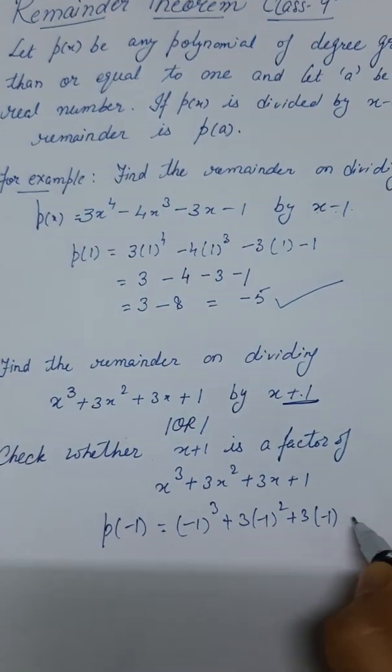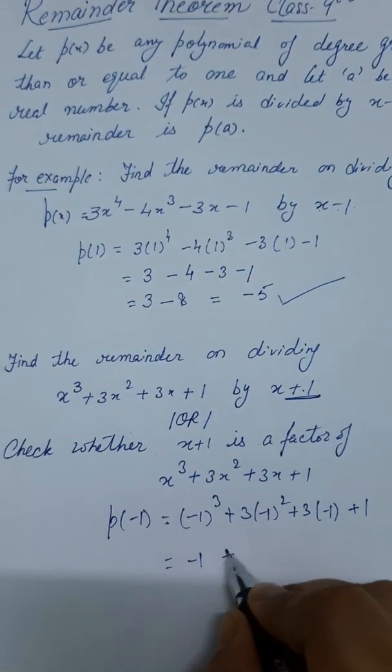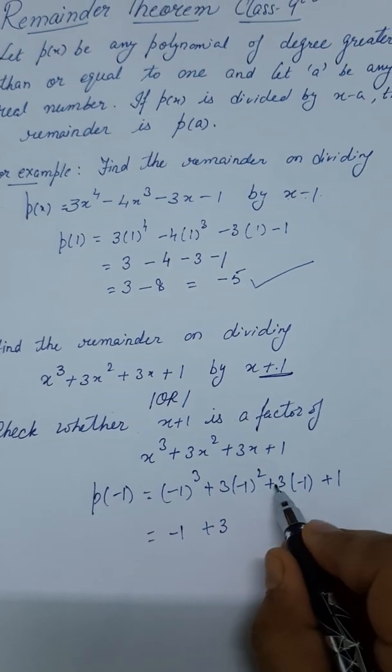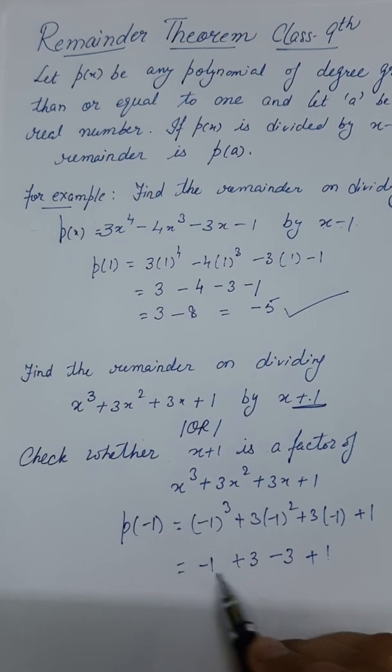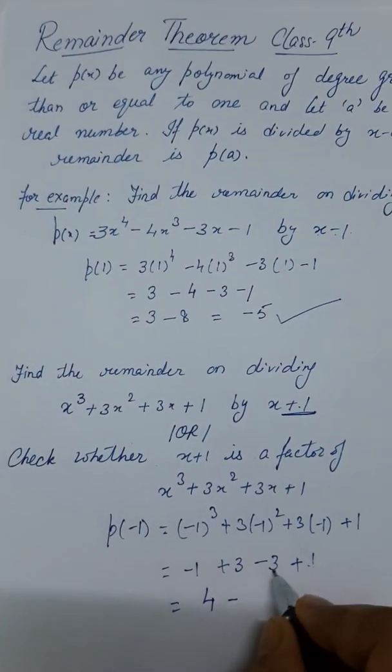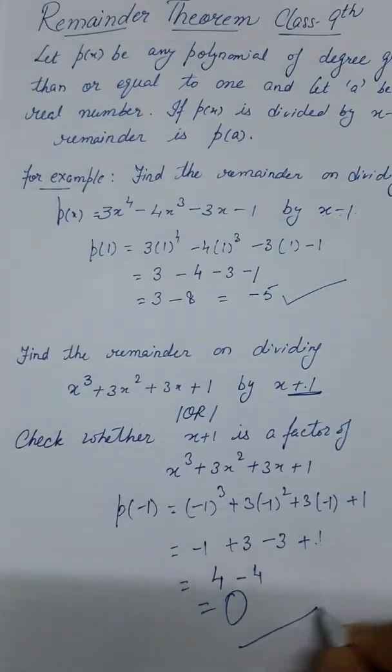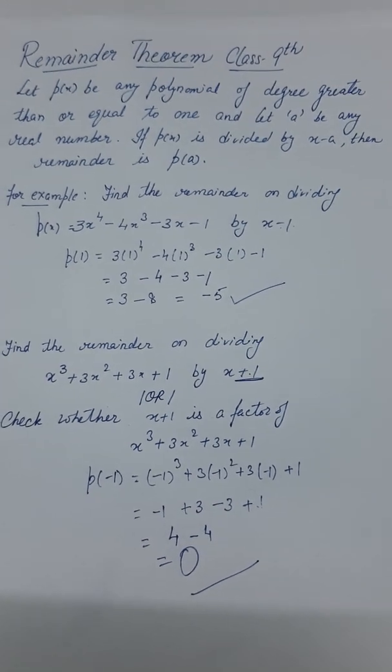So (-1)³ + 3(-1)² + 3(-1) + 1. This equals -1 + 3 - 3 + 1, which equals 0. So 0 is our remainder.